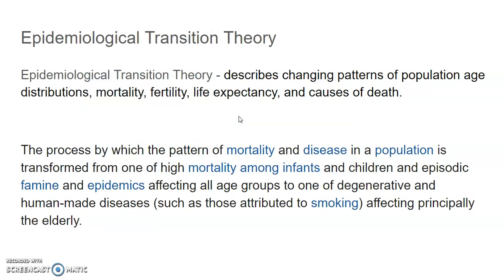The epidemiological transition theory and epidemiological transition model describe the stages the world has gone through in terms of disease and how it has impacted human population over the period of civilization. This theory describes the changing patterns of population age distributions, mortality, fertility, life expectancy, and causes of death — specifically the transformation from high death rates among infants and children and episodes of famine and epidemic, to more degenerative and human-made diseases like those from lifestyle choices such as smoking and obesity, affecting principally the elderly.